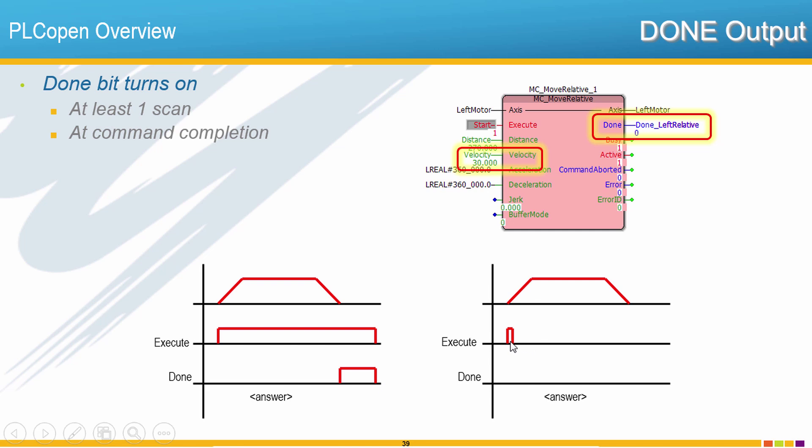But what if the execute input is reset, it turns back off before the motion is complete? Then what will happen with the done output? And PLCopen says that it must remain on for one scan. While we're talking about this done output it's important to distinguish done versus motion complete, because while you may have told the motor to do a profile it doesn't mean that it exactly followed you. It may be all over the place depending on external forces or tuning.